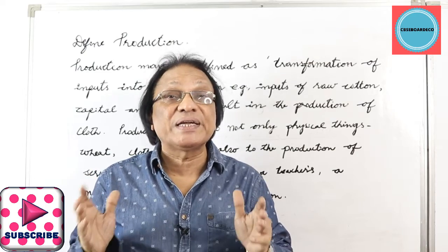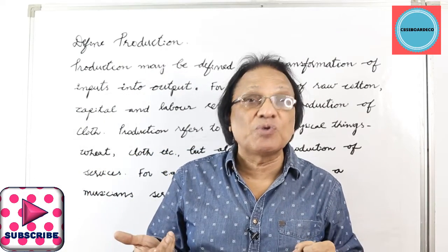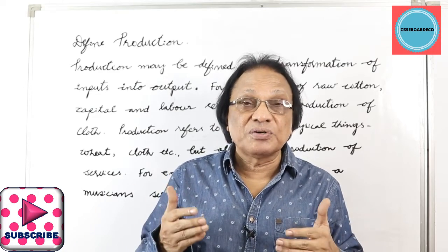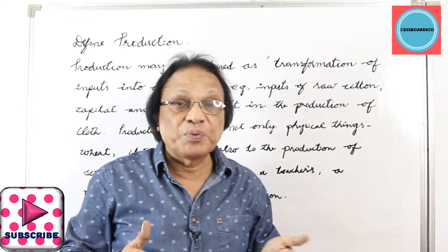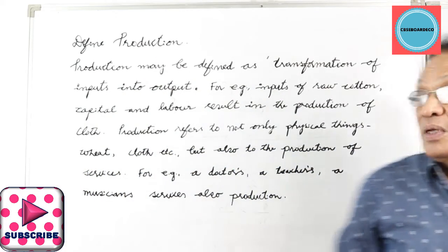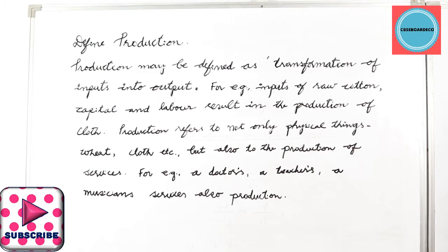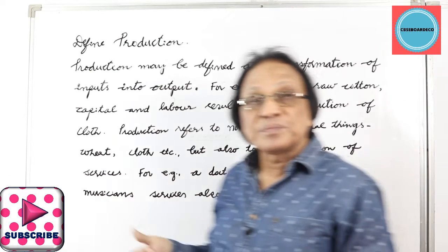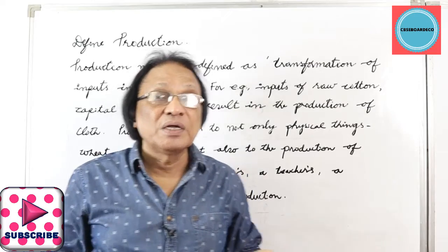So to summarize: production in economics is defined as transformation of inputs into output. Transforming wood into furniture is production. Production refers not only to physical things like producing wheat or cloth, but also to the production of services — for example, a doctor's, a teacher's, or a musician's services are also production. Look on the board: production may be defined as transformation of inputs into output. For example, inputs of raw cotton, capital, and labor result in the production of cloth.